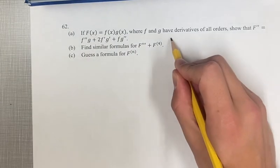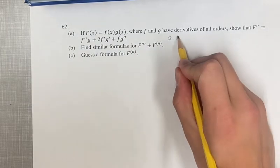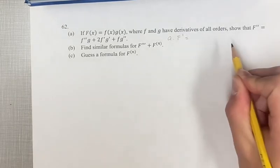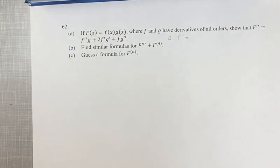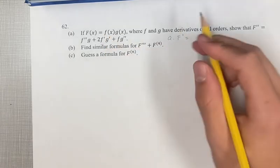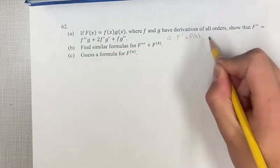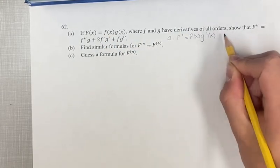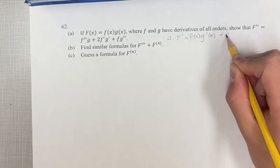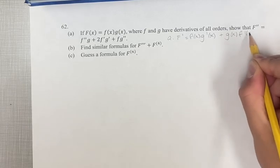So the first derivative is equal to — since we have a product of two functions, we can use the product rule. So we have the first times the derivative of the second, plus the second times the derivative of the first.